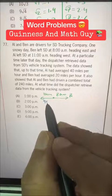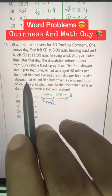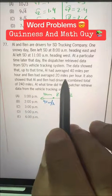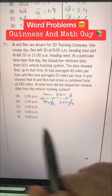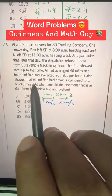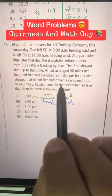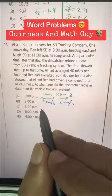So 40 miles per hour Al is going and Ben had averaged 20 miles per hour. So 20 miles per hour here, and it also showed that Al and Ben had driven a combined total of 240 miles. So from here,